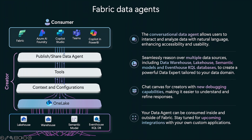Your data lives in different types of data sources, and you start setting up this data agent by connecting different data sources — whether lakehouse, warehouse, semantic model, or KQL. You provide some context, customization, and configuration — for example, business terminologies used in your organization. You can also add different tools, and soon we will be supporting MCP, the model context protocol. Finally, you can publish and share this data agent with colleagues across your organization.